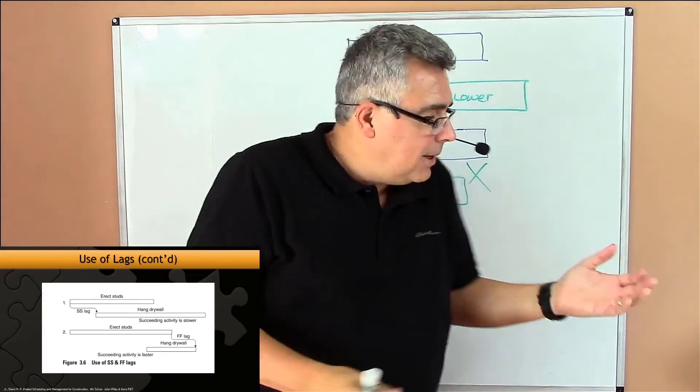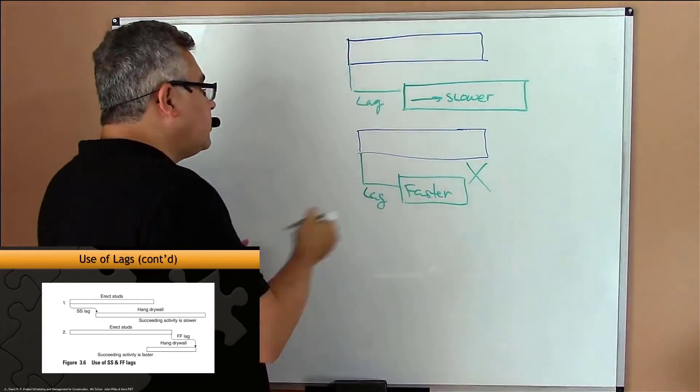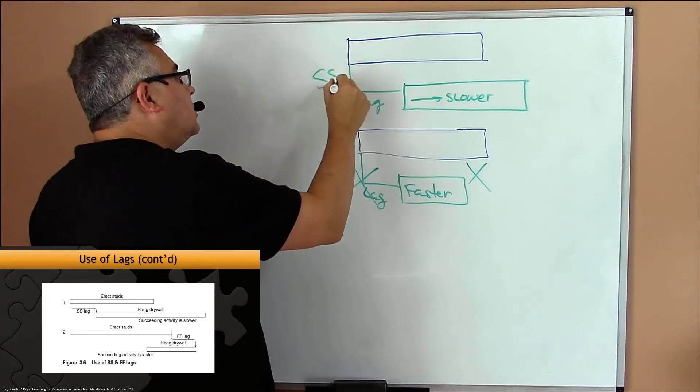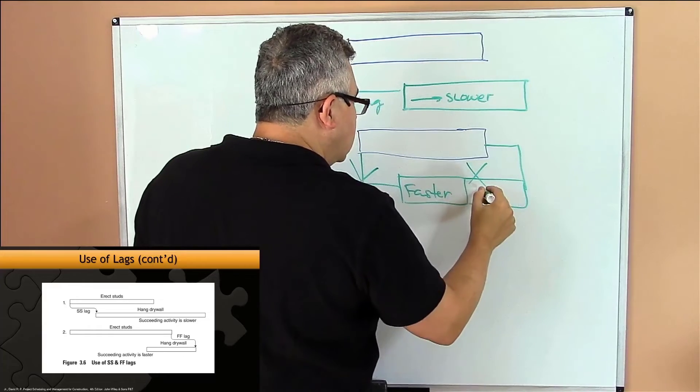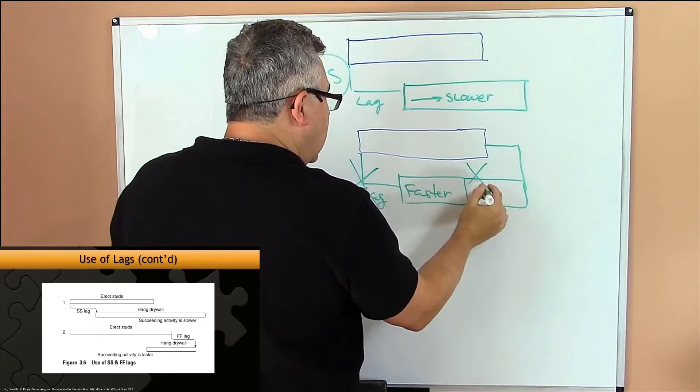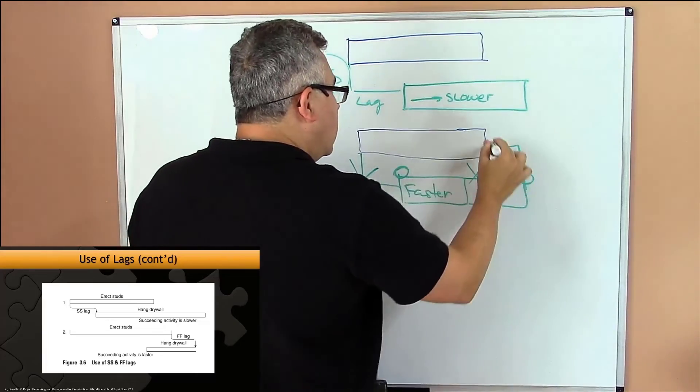And that doesn't work. So when the second activity is faster, we don't use start-to-start. We use finish-to-finish.